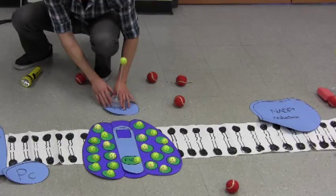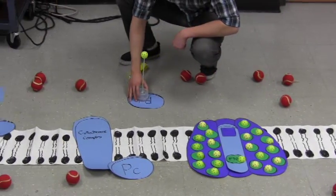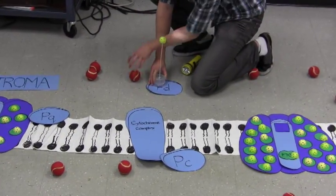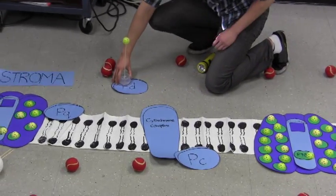So it looks like ferridoxin is a mobile element, kind of like a ferry, just to move electrons around in the stroma.